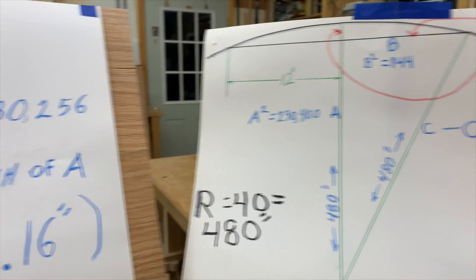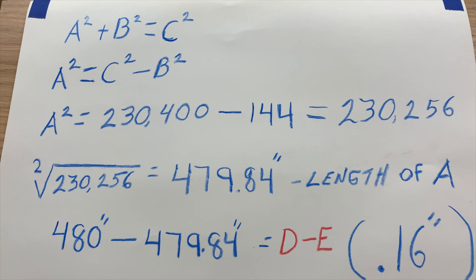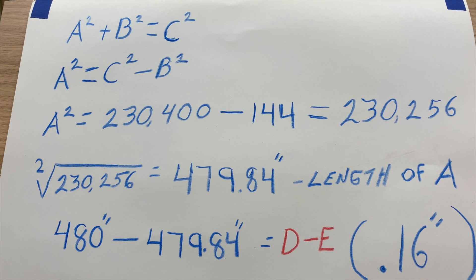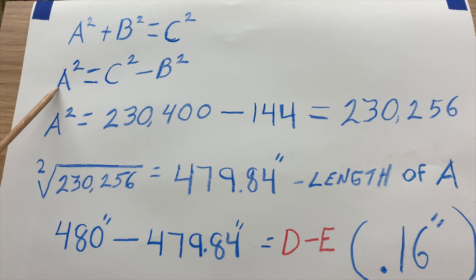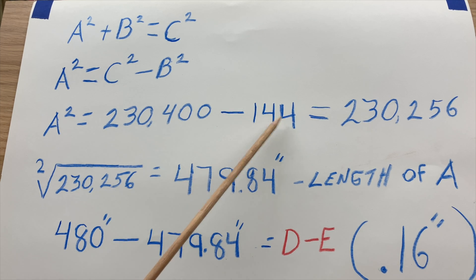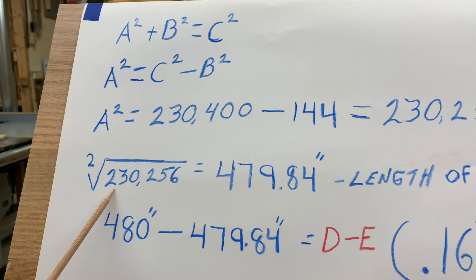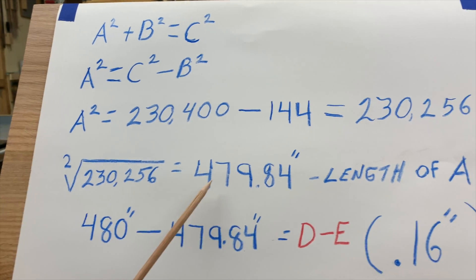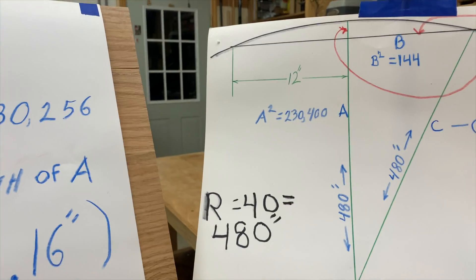Moving from the explanation to the actual arithmetic — not too hard. As mentioned, we're going to the Pythagorean theorem: A squared plus B squared equals C squared. As a result of this logic, A squared equals C squared minus B squared. Plugging in the numbers: A squared is 230,400 minus B squared, which is 144, giving a result of 230,256. If we calculate the square root of 230,256, we get 479.84, which is the length of line A.